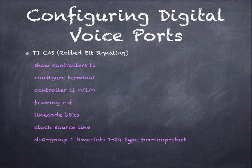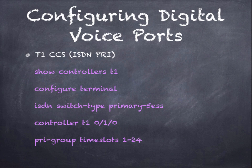Configuring digital voice ports: the typical digital voice port is the T1. There are several types. The first is CAS, sometimes called robbed bit signaling — a CAS T1 provides 24 channels but robs bits out of each channel to provide the signaling. The second type is T1 CCS, or common channel signaling, such as an ISDN PRI. With this type, you get 23 voice channels and the 24th channel carries signaling information — no bits are robbed from the voice channels. These are the most common type of T1 you will see today.